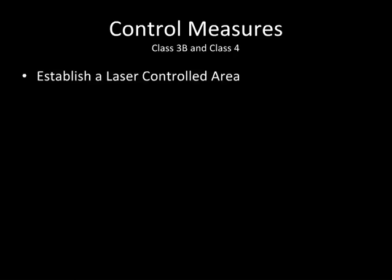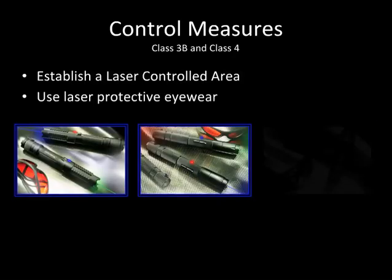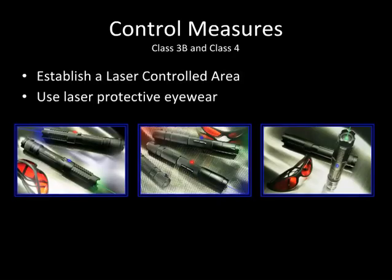Establish a laser control area. This area should contain the nominal hazard zone. Anyone occupying this area while the laser is operated must be protected from all laser hazards. All unnecessary personnel should be located outside the controlled area when the laser is operational. Laser protective eyewear should be worn by anyone in the laser controlled area when Class 3B lasers are operated, and must be worn by persons within the laser controlled area when Class 4 lasers are operated.